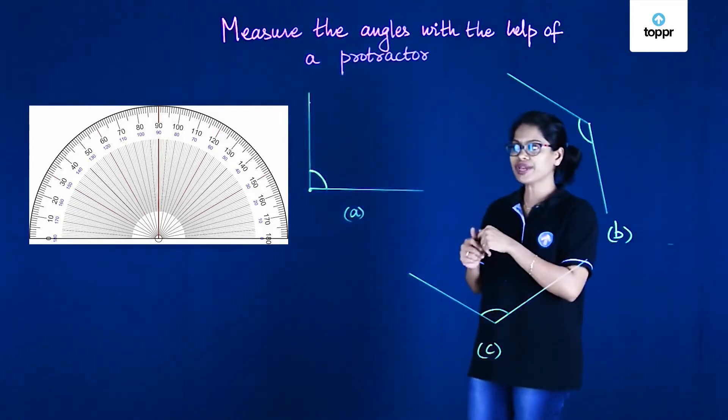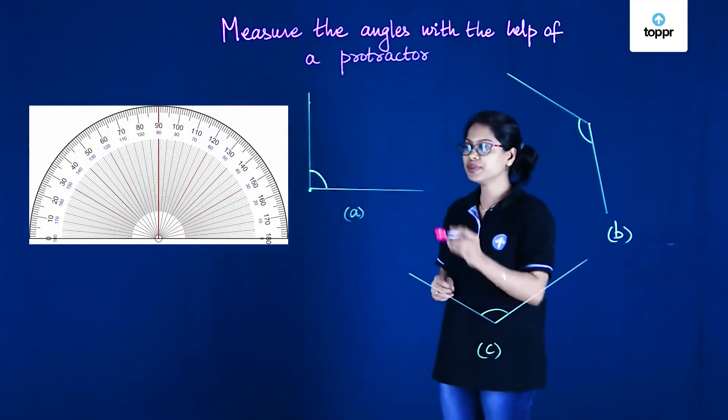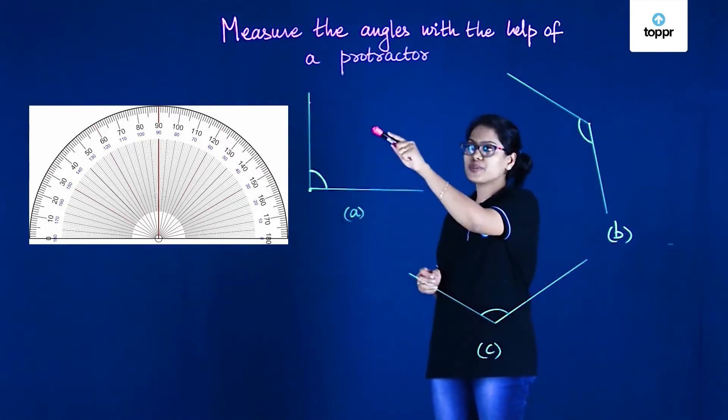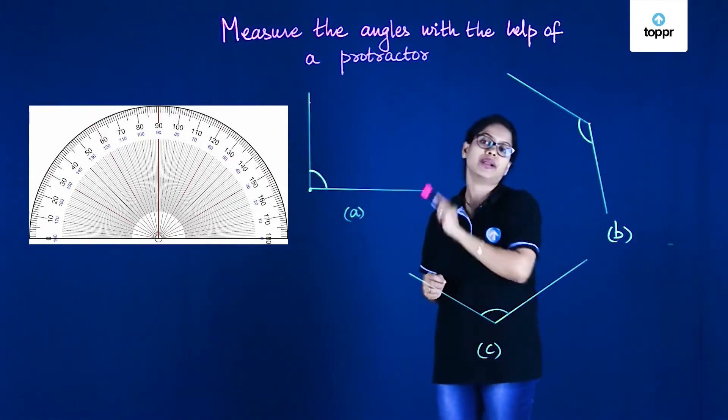In the protractor, if you look at it carefully, we can see that the measurements start from 0 at one end, and if we follow the measurements, it will end at 180 at the other end.